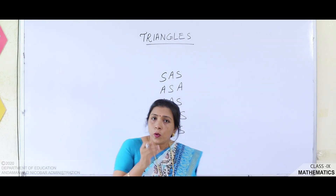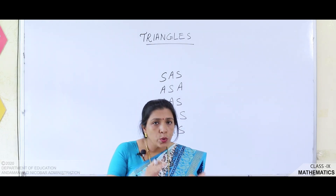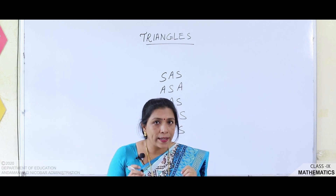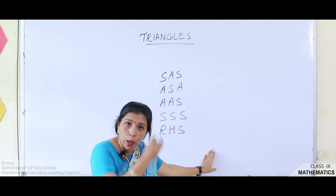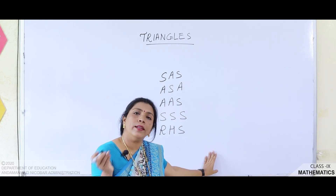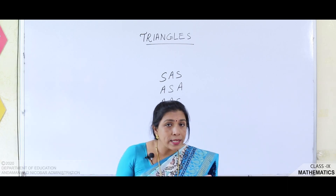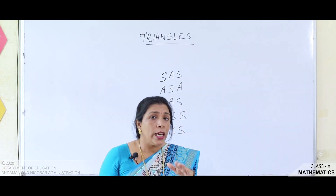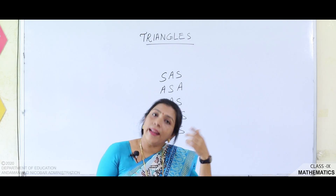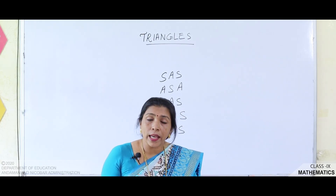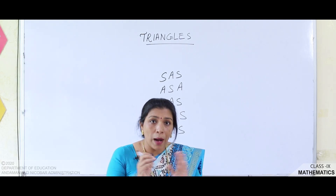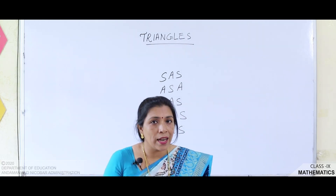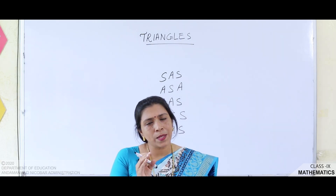We did a few examples, and we learnt that to prove two triangles are congruent, we have to find three equal parts from both the triangles, using any one of the five congruence conditions. You have to read your questions very carefully, because sometimes the equal parts are directly given, otherwise they are given indirectly or you can find them from your diagrams. Today we will start the class with an example.